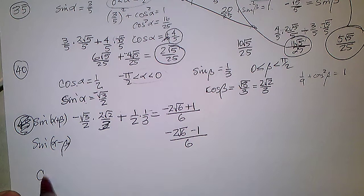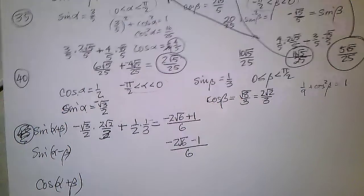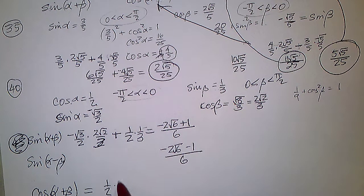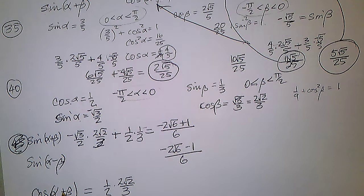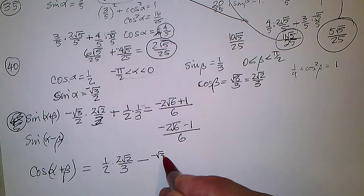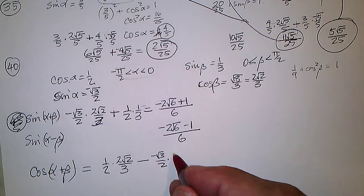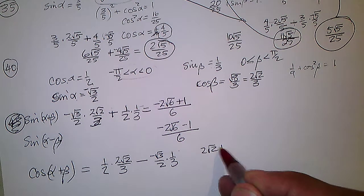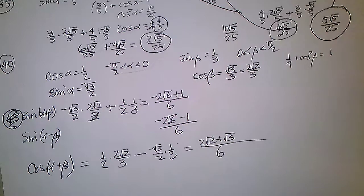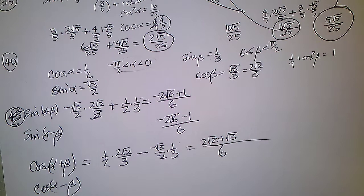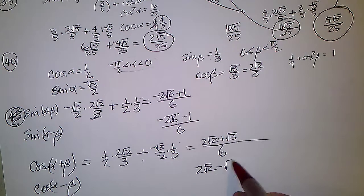For cosine of alpha plus beta, it's cosine cosine minus sine sine. Cosine alpha is 1/2, cosine beta is 2√2/3. When cosine is plus, we subtract. Sine alpha is negative √3/2 and sine beta is 1/3. So we get 2√2 plus √3 over 6. For cosine of alpha minus beta, we flip that sign on √3, giving 2√2 minus √3 over 6.